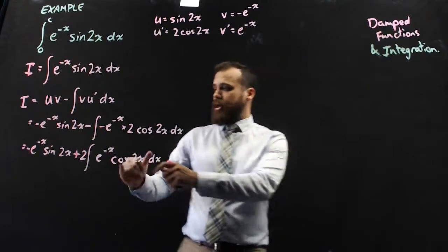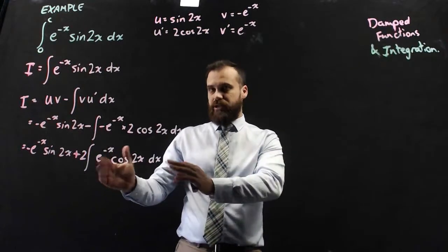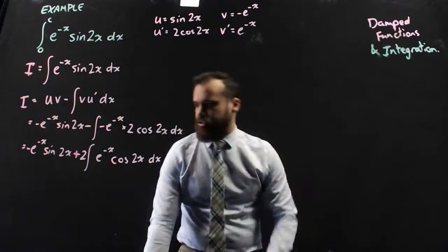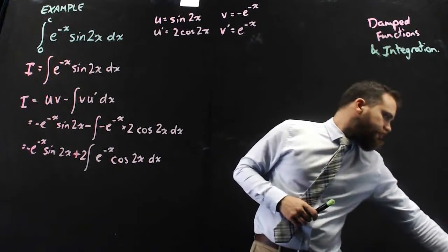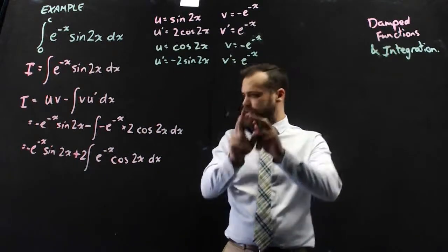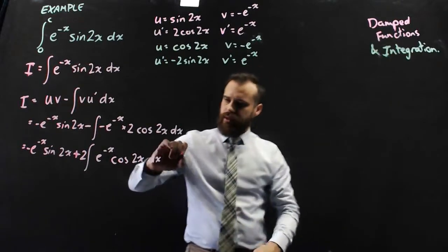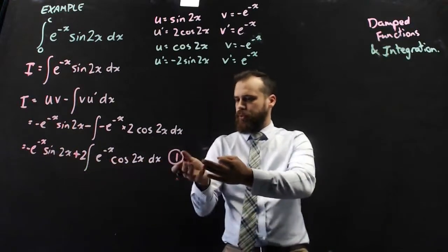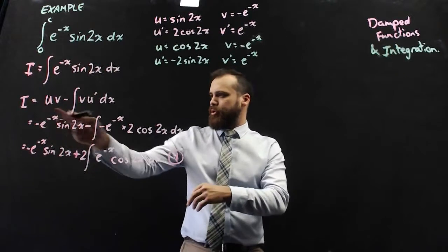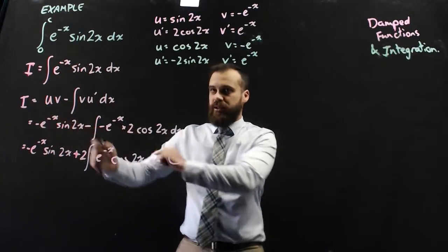We still have an integral of a function multiplied by a function, so it looks like we've got another integration by parts to work with. We'll let cos 2x be u and e to the negative x be v dash. I'll do a bit of working in green pen. u dash is negative 2 sine 2x, etc. I'm going to label the previous result equation 1 and leave it there, then work on this new integral using the integration by parts formula.